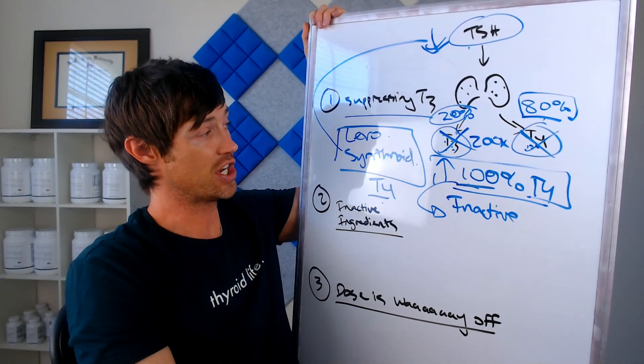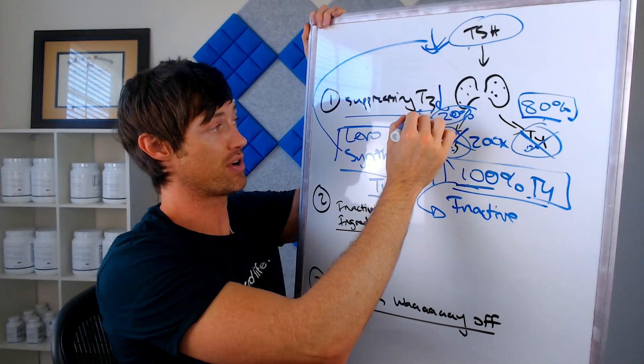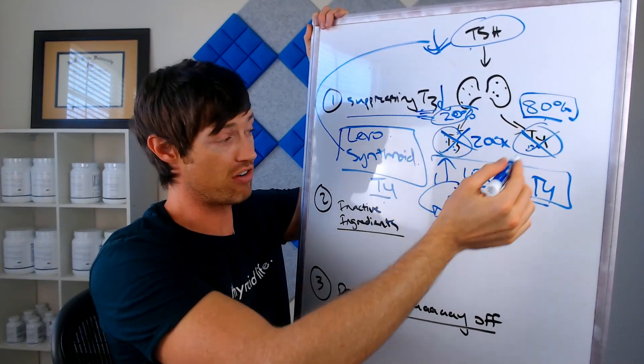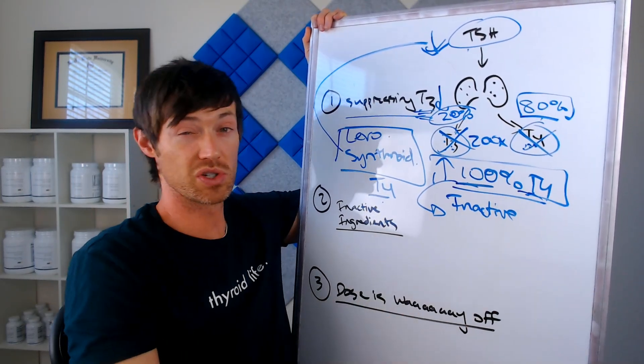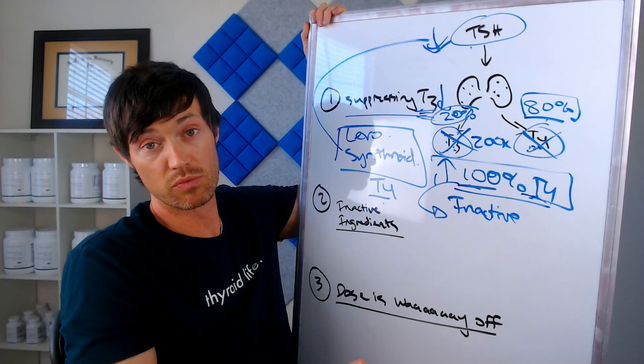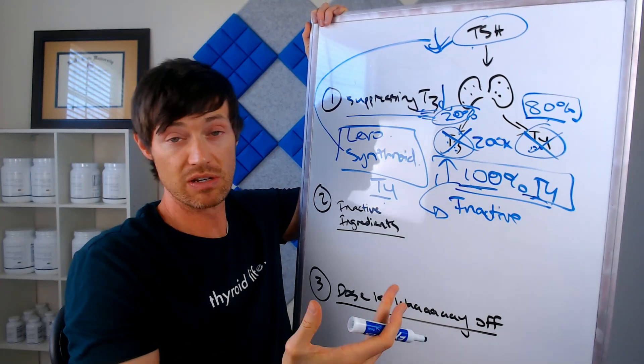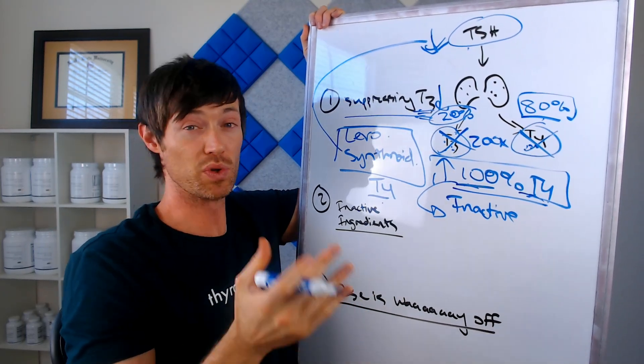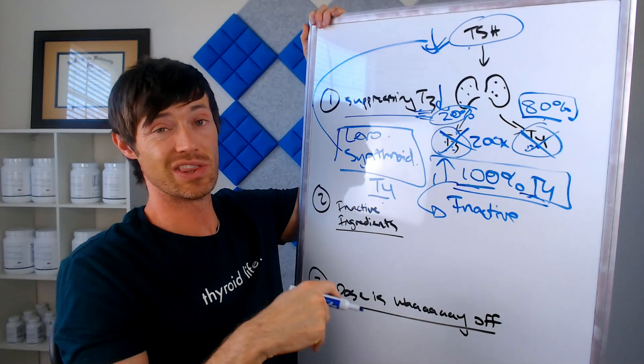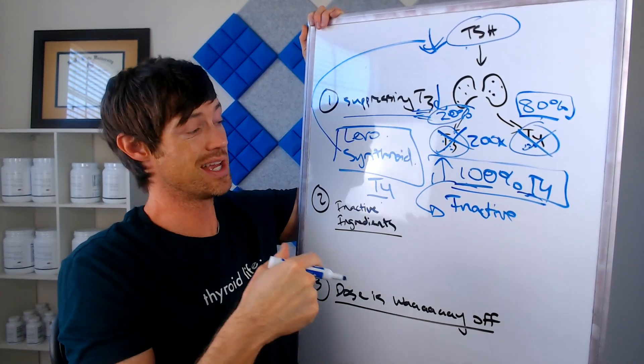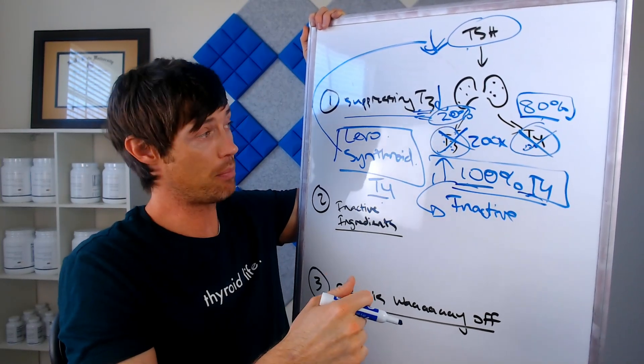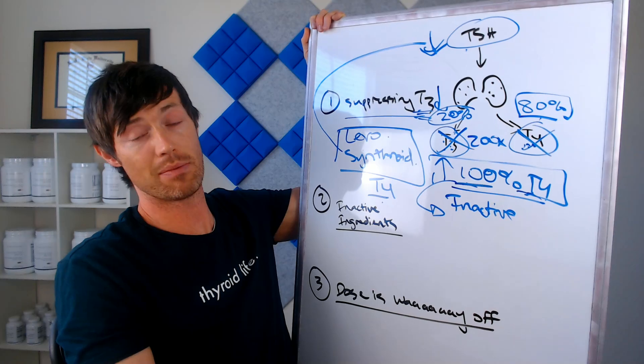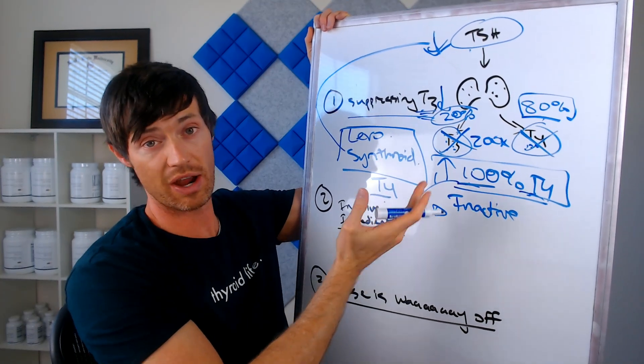So what ends up occurring is that you're dropping your T3, which is why I say you're suppressing that T3 in favor of more T4, which often results in you feeling worse and experiencing more hypothyroid symptoms. So some people will take levothyroxine and Synthroid. They'll start gaining weight. They'll start having more hair loss. They'll start having worsening symptoms of hypothyroidism. And they'll say, how can this happen? This is it. This is physiology, thyroid physiology, one-on-one.